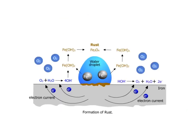Looking at this diagram: iron (Fe) first loses electrons to become Fe2+. The electrons then mix with water and oxygen to form hydroxide. The hydroxide and Fe2+ combine — shown by two arrows merging — to form iron(II) hydroxide. Iron(II) hydroxide then reacts to form iron(III) hydroxide, which further reacts to give rust.